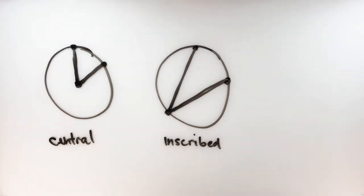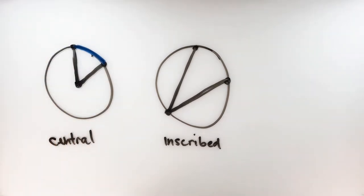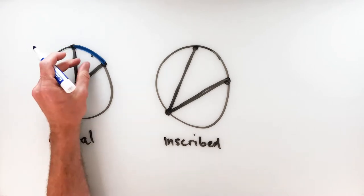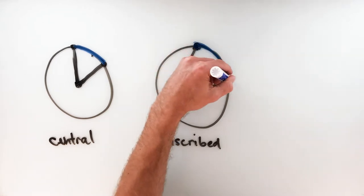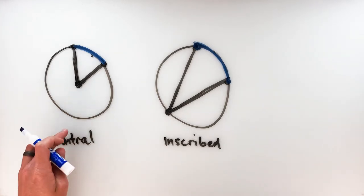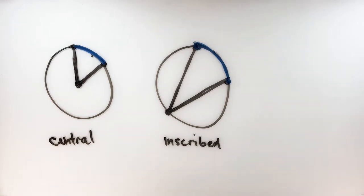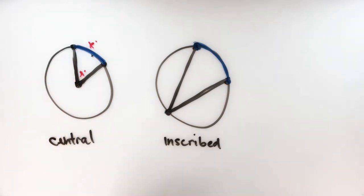The arc that each of these angles cuts off — for example in the central angle, the arc that is in between the two endpoints — we call that the intercepted arc for that angle. The central angle intercepts that arc, and just like that, an inscribed angle intercepts its arc too. The relationship between arcs and central angles is that a central angle is always equal to the measure of its intercepted arc, because 360 degrees around the outside equals 360 degrees around the center.